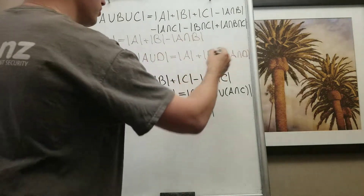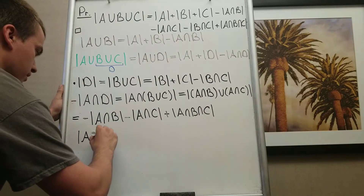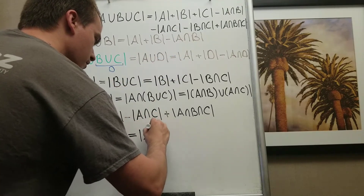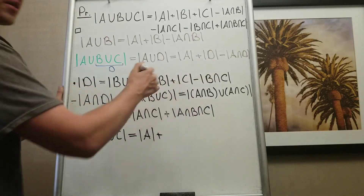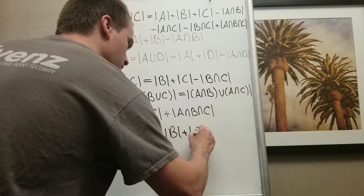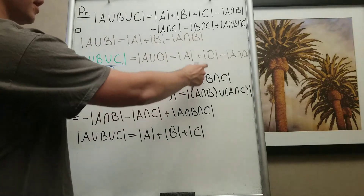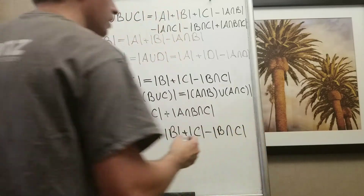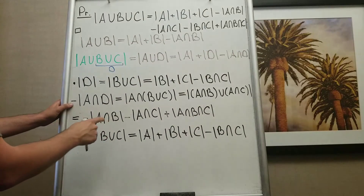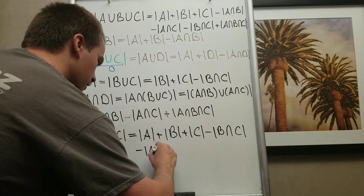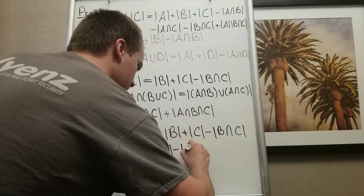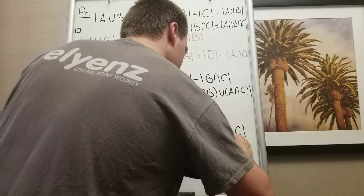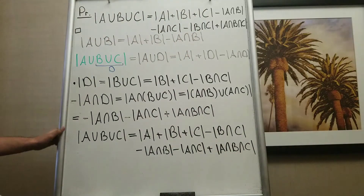Putting it all together, |A ∪ B ∪ C| equals |A| + |B| + |C| (from expanding |D|), minus |B ∩ C| (also from |D|), minus |A ∩ B| and minus |A ∩ C| (from the negative |A ∩ D| term), and finally plus |A ∩ B ∩ C|. This completes the proof of the formula.